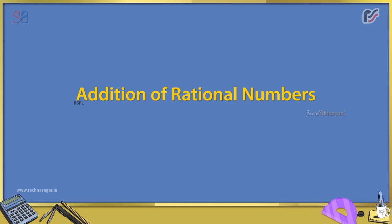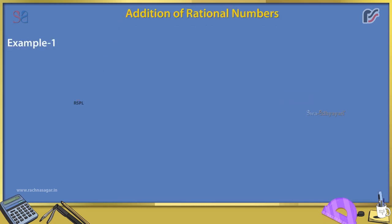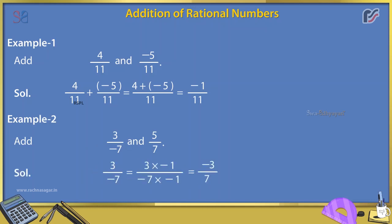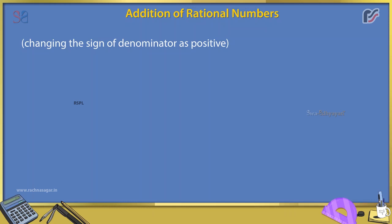Addition of Rational Numbers. Example 1: Add 4/11 and -5/11. Solution: 4/11 + (-5/11) = (4 + (-5))/11 = -1/11. Example 2: Add 3/(-7) and 5/7. Solution: 3/(-7) = (3 × -1)/((-7) × -1) = -3/7. Therefore, -3/7 + 5/7 = (-3 + 5)/7 = 2/7.